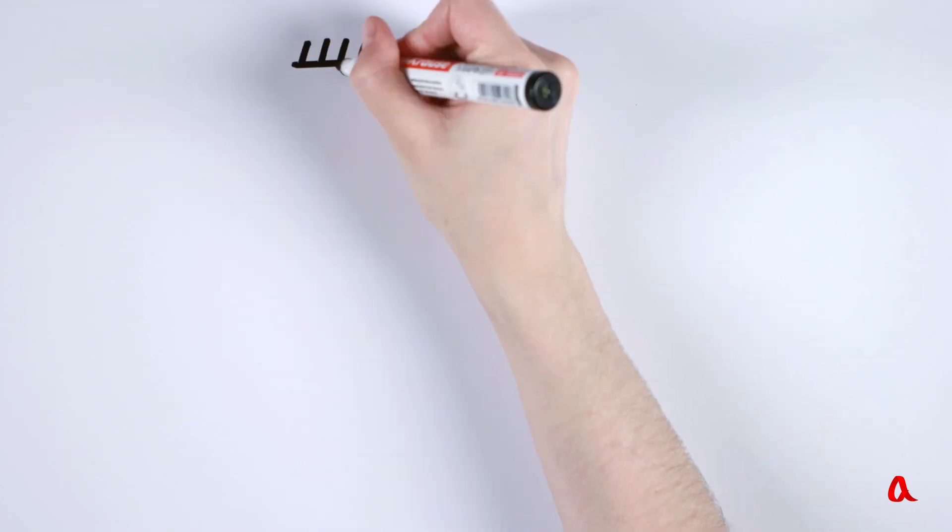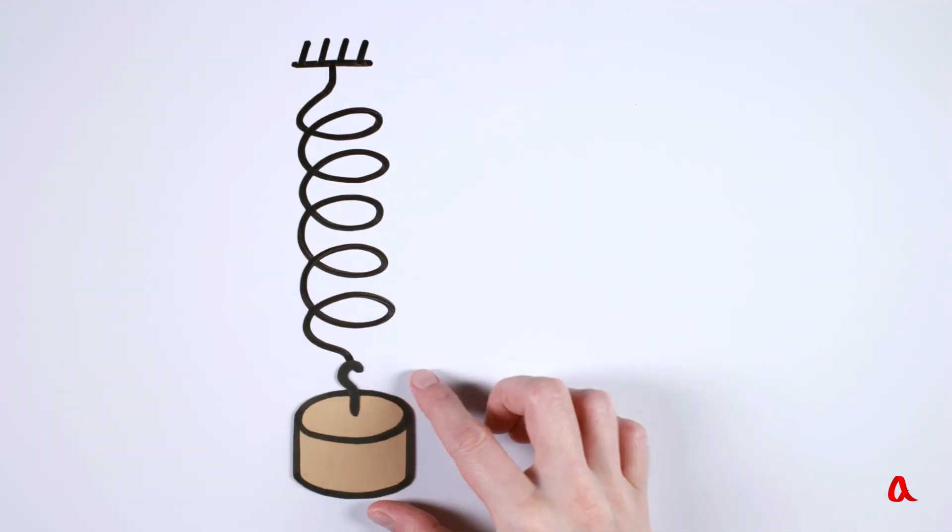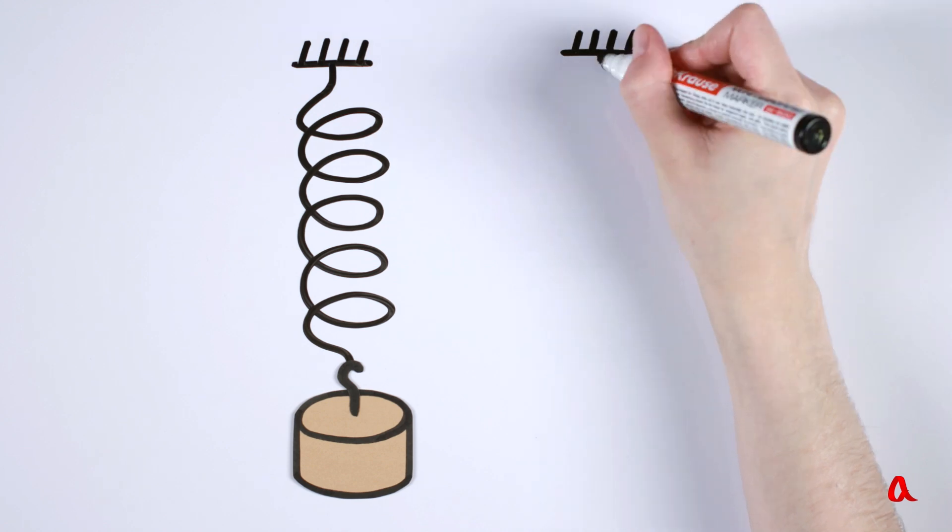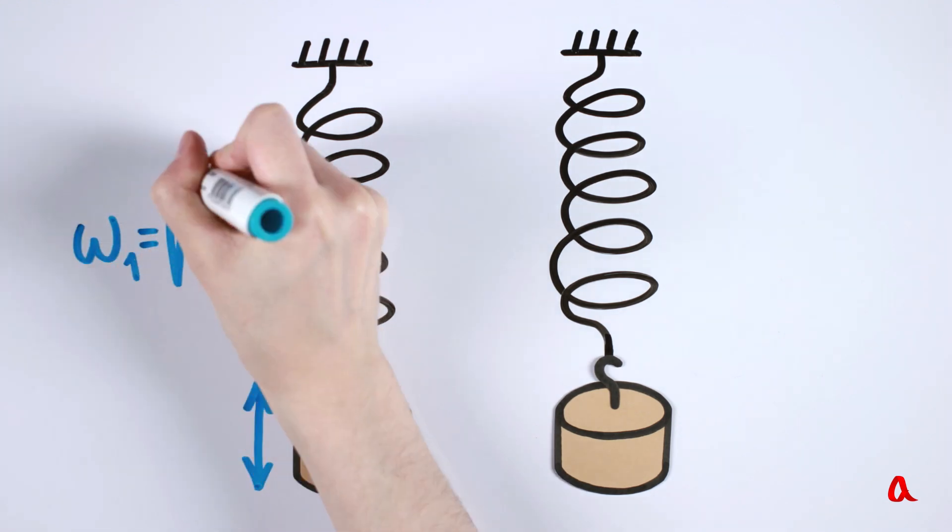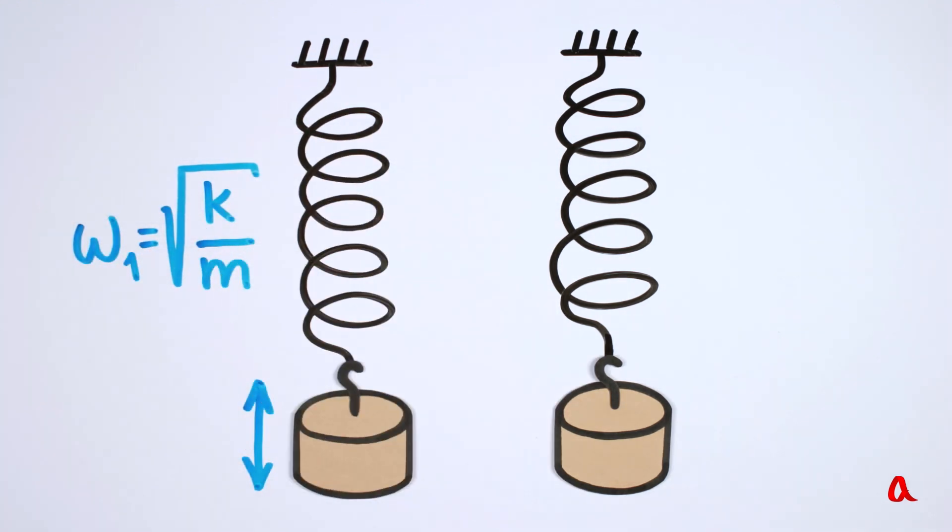But if you stop to think about it, this transition from vertical to rotational oscillations and back looks very strange. After all, the pendulum has a natural frequency of vertical oscillations, which is determined by the spring stiffness relative to its stretching and compression, and the mass of the load.